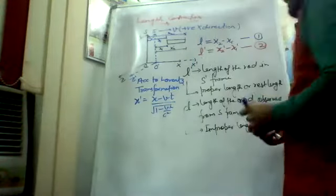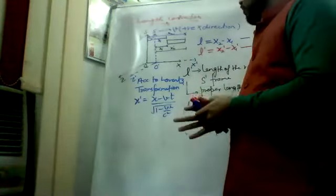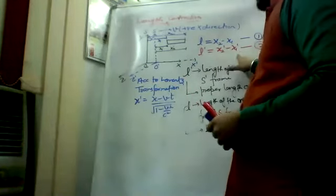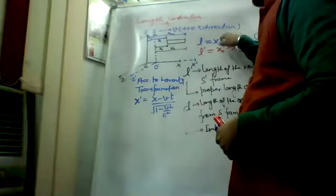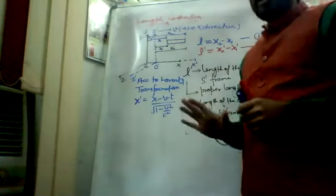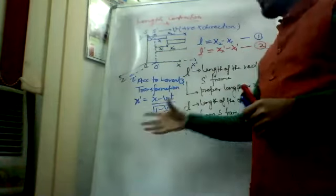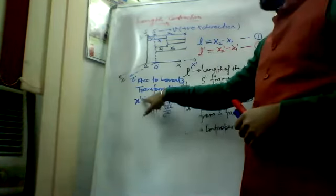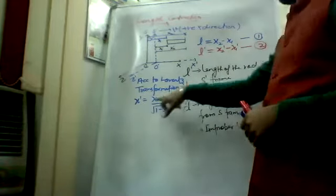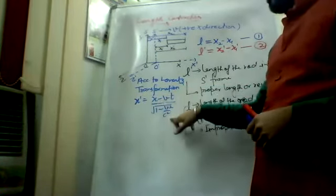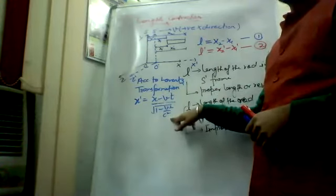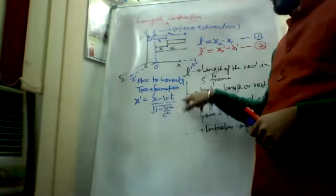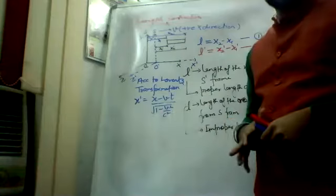Now using Lorentz transformation, we write x2-dash and x1-dash in terms of x2 and x1.